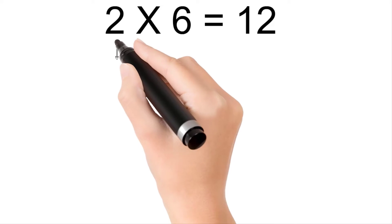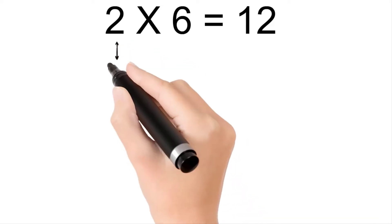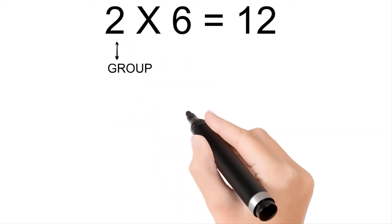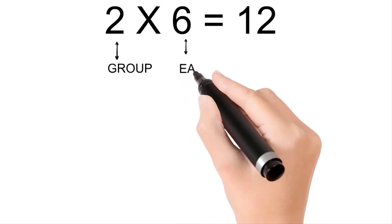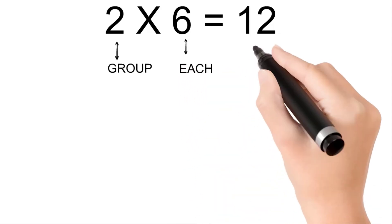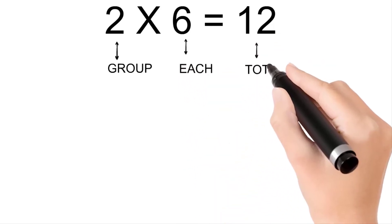Two times six is twelve. Two is group, six is each, and twelve is total.